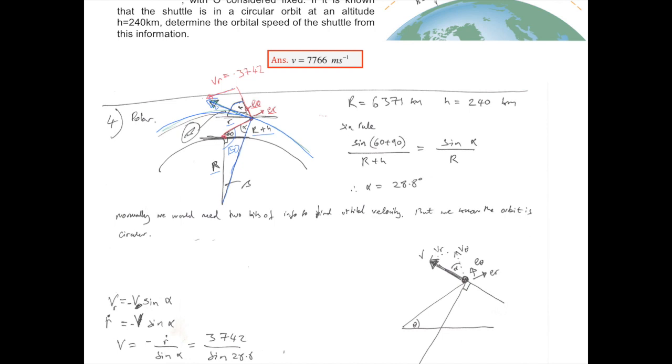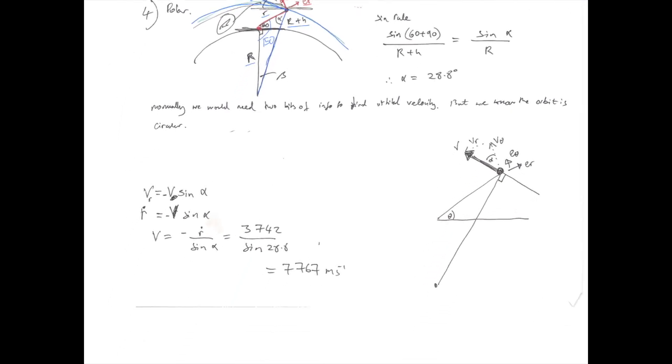And that's all we need in order to get V from VR, because that's the angle alpha there. So R dot is equal to minus V sine alpha. Remember it's negative.